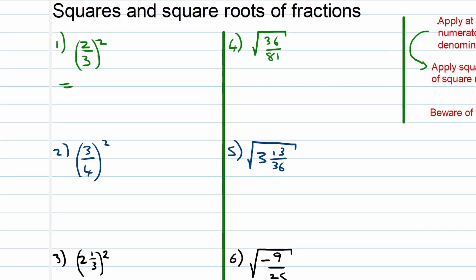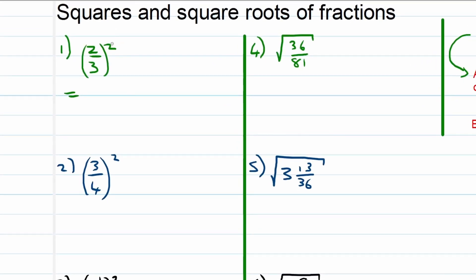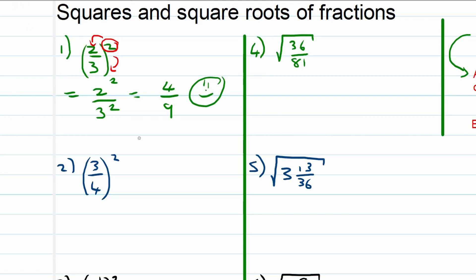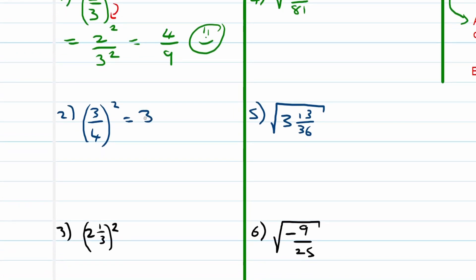Let's do some practice. 2 over 3 squared is equal to 2 squared over 3 squared. This exponent applies to both the numerator and the denominator. From here it's easy to calculate: 2 squared is 4, 3 squared is 9. Do we have any common factors? No we don't. Therefore we are done.